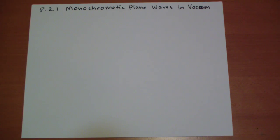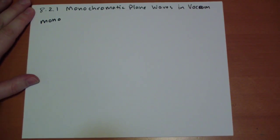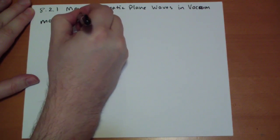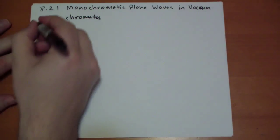First, we're going to look at what an EM plane wave might look like. Before we begin, let's talk about what monochromatic means. Mono means one, and chromatos is the Greek for color. So, monochromatic means one color.